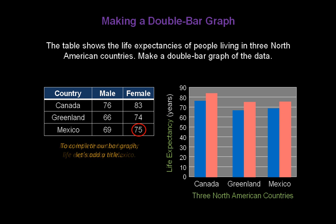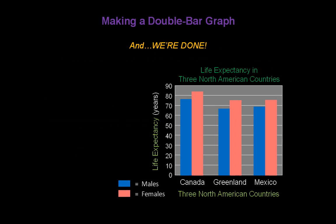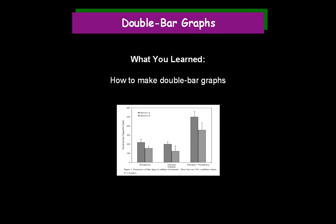Nice looking graph. To complete the bar graph, we need to do a couple more things. One, we need to add a title: Life Expectancy in Three North American Countries. And we need to do one more thing — we need to add a key. The reader of this graph needs to know what the colored bars represent, so we're going to put a key at the bottom telling them that blue represents males and pink represents females. And we're done. Congratulations — you just made a double bar graph and you learned how to make any kind of double bar graph.